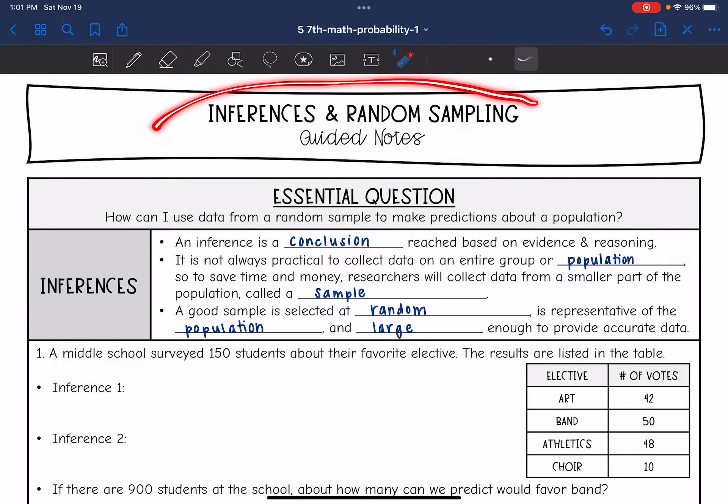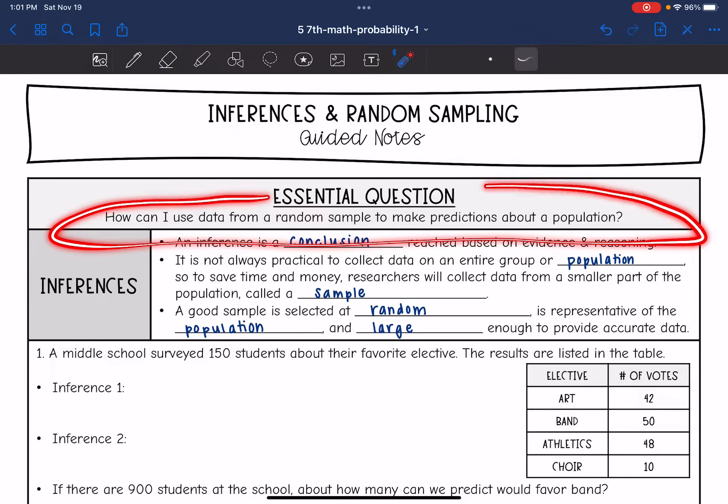Hey guys, today we're going to look at inferences and random sampling. We're going to answer the question, how can I use data from a random sample to make predictions about a population?